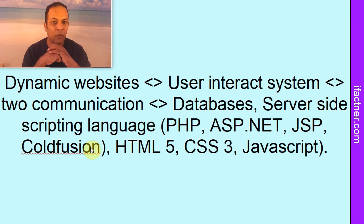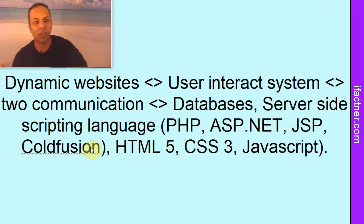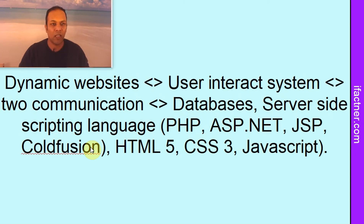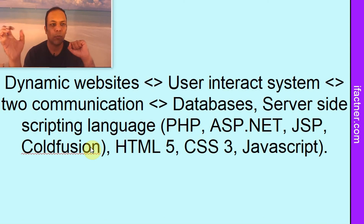Now let's see what dynamic websites are. Dynamic websites are those websites with which the users can interact. For example, a user can log into the system, they can check their comments, they can comment on different topics, they can check their emails, or if we want to do shopping online, then we need to go to dynamic websites. Dynamic websites are a two-way communication — the user gives some kind of input, it goes to the server, the server processes it and gives us the output.